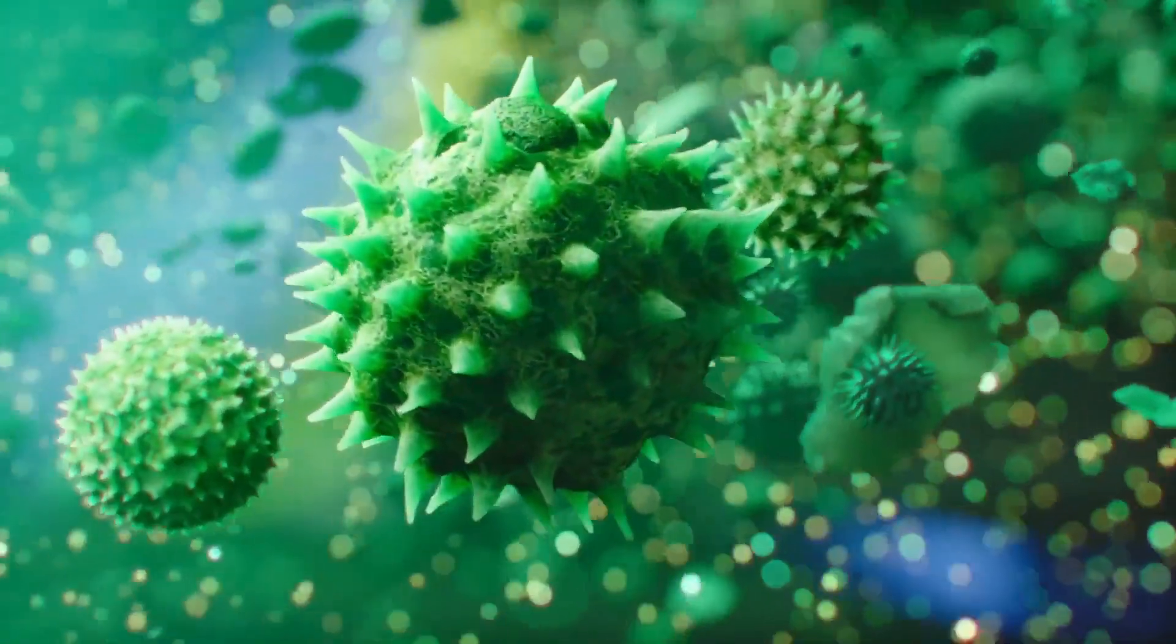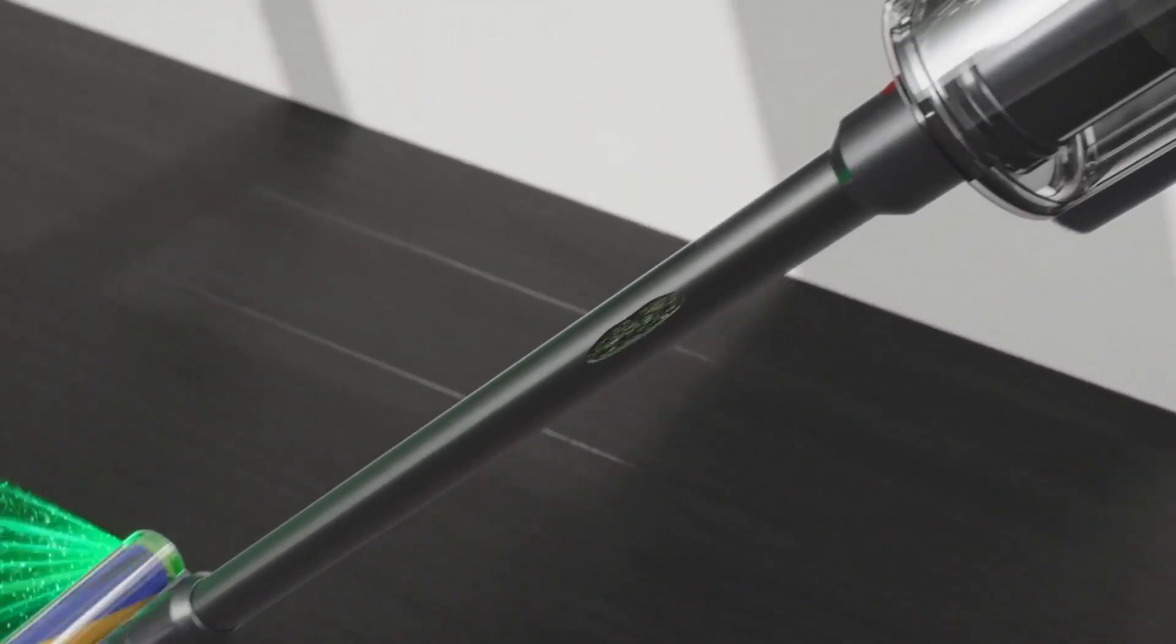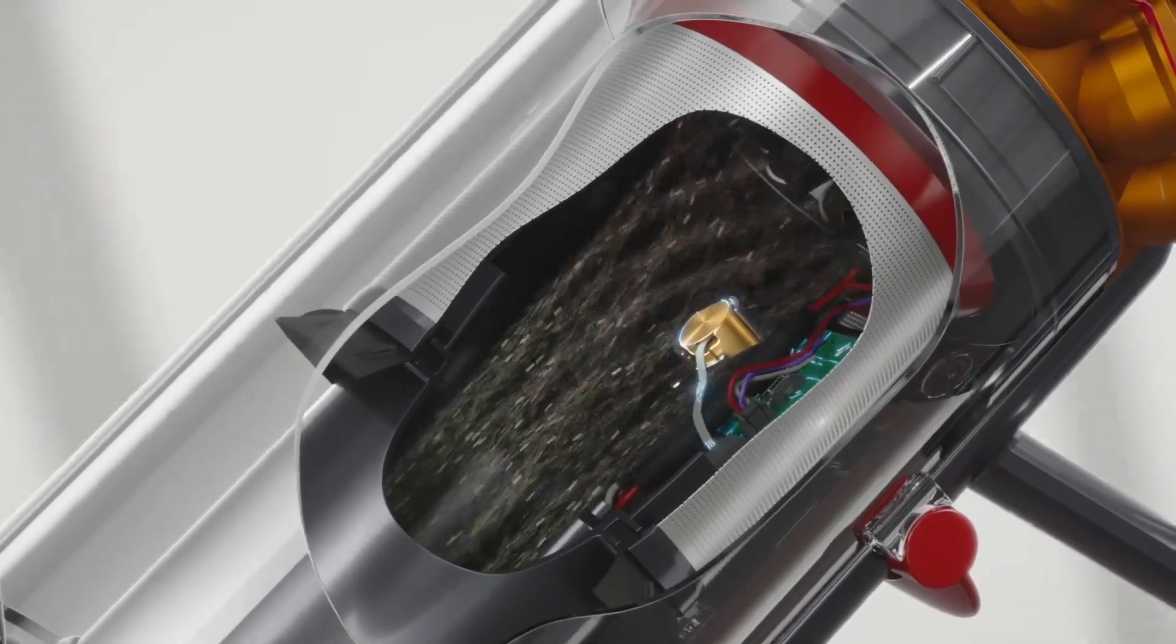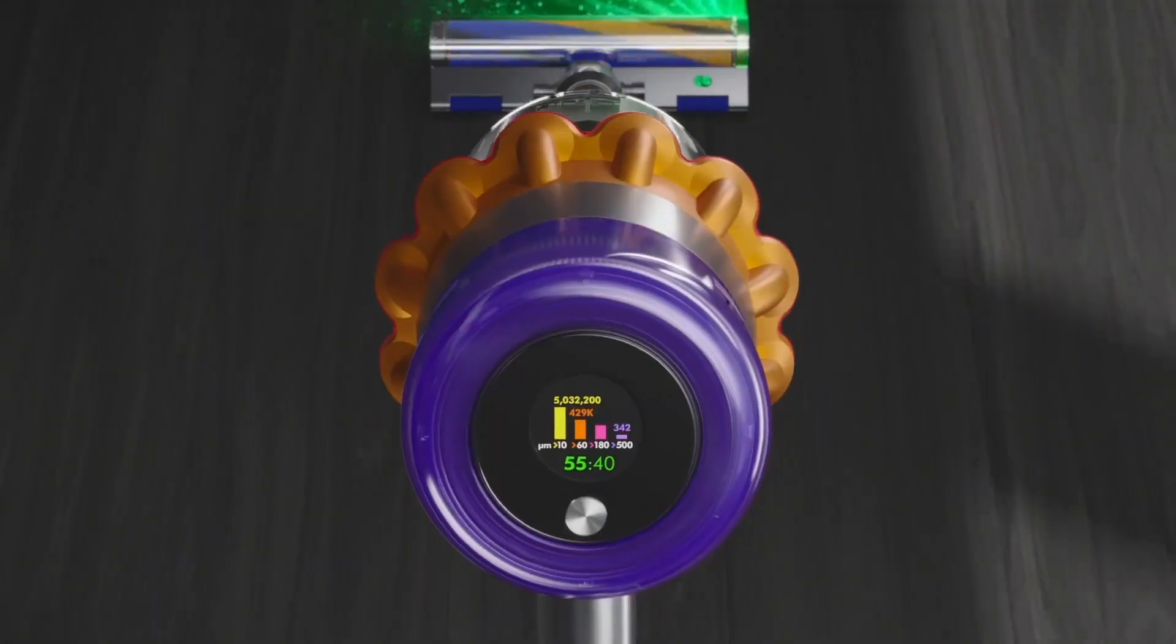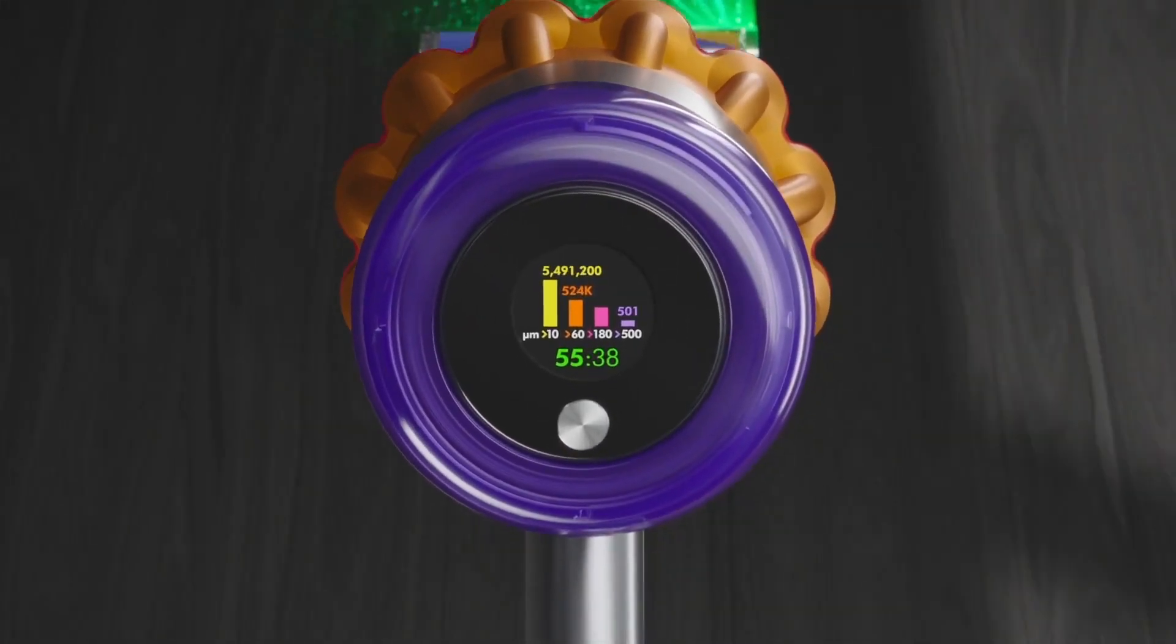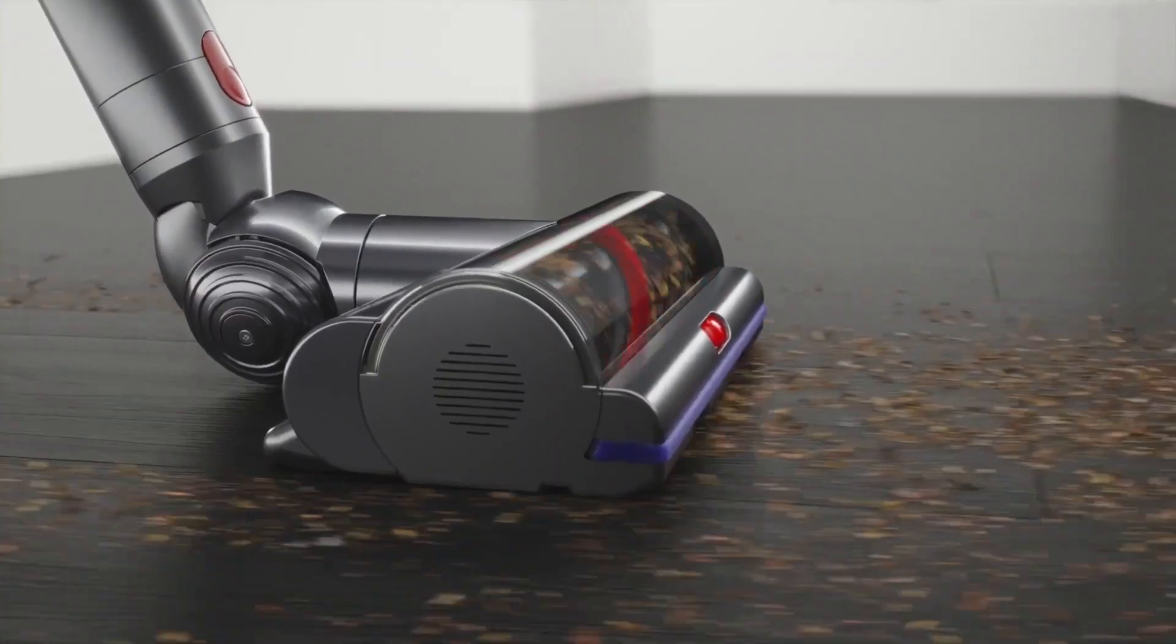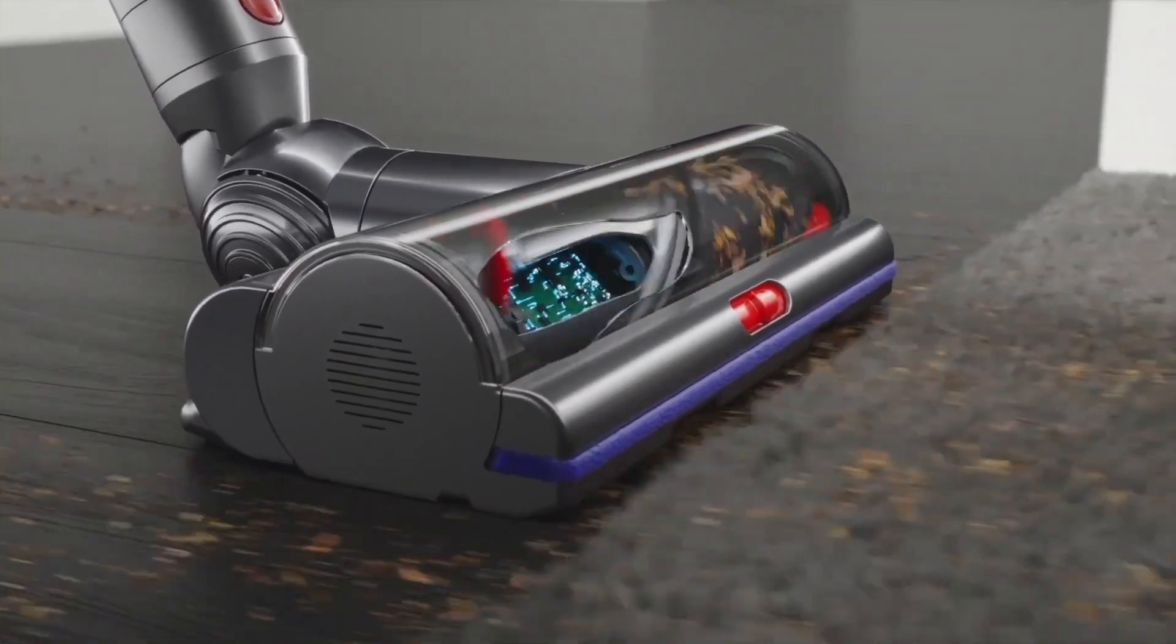Moreover, the vacuum can automatically adjust its suction power based on the type of floor being cleaned, thanks to its intelligent sensing technology. The V15 Detect comes with a range of attachments and tools, including the new anti-tangle hair screw tool designed to remove pet hair from carpets and upholstery effectively. This vacuum also features a color LCD screen that displays real-time performance data.